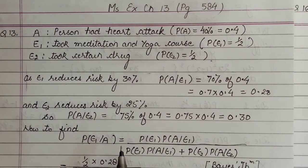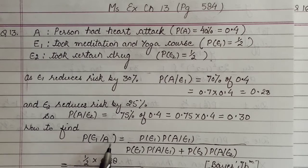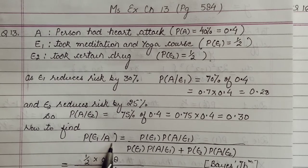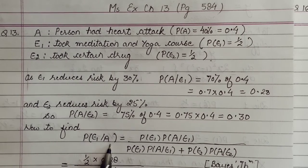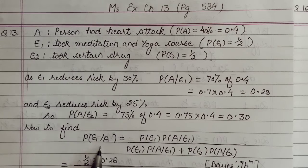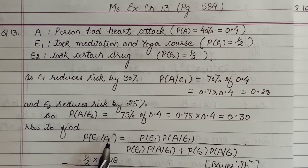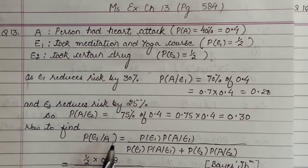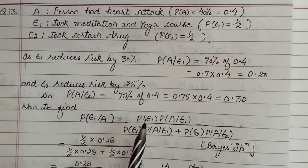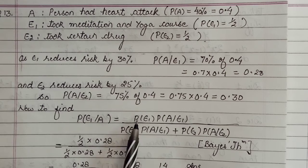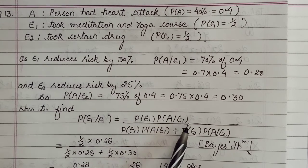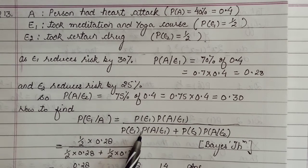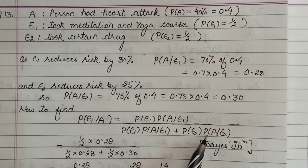But what was the question asking you? Probability that heart attack occurred was the given condition. So the one who had heart attack - what is the probability they opted for meditation? That means probability of E1 after A, right. So by Bayes' theorem we know this would be the formula: probability of E1 times probability of A after E1, upon probability of E1 times probability of A after E1 plus probability of E2 times probability of A after E2.